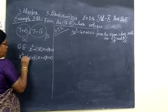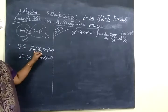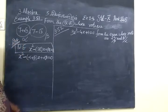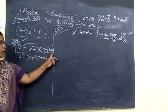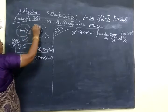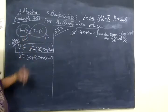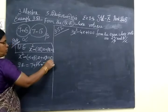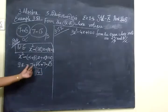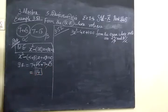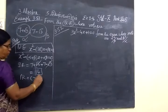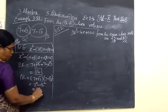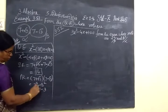Most students write plus instead of minus, so be careful with the formula. The sum of the roots: (7 plus root 3) plus (7 minus root 3) — the root 3 terms cancel — so 7 plus 7 is 14. Sum of the roots equals 14. Then the product of the roots: (7 plus root 3) times (7 minus root 3) equals 7 squared minus root 3 squared, which is 49 minus 3. Root 3 squared is 3, so product of the roots equals 46.